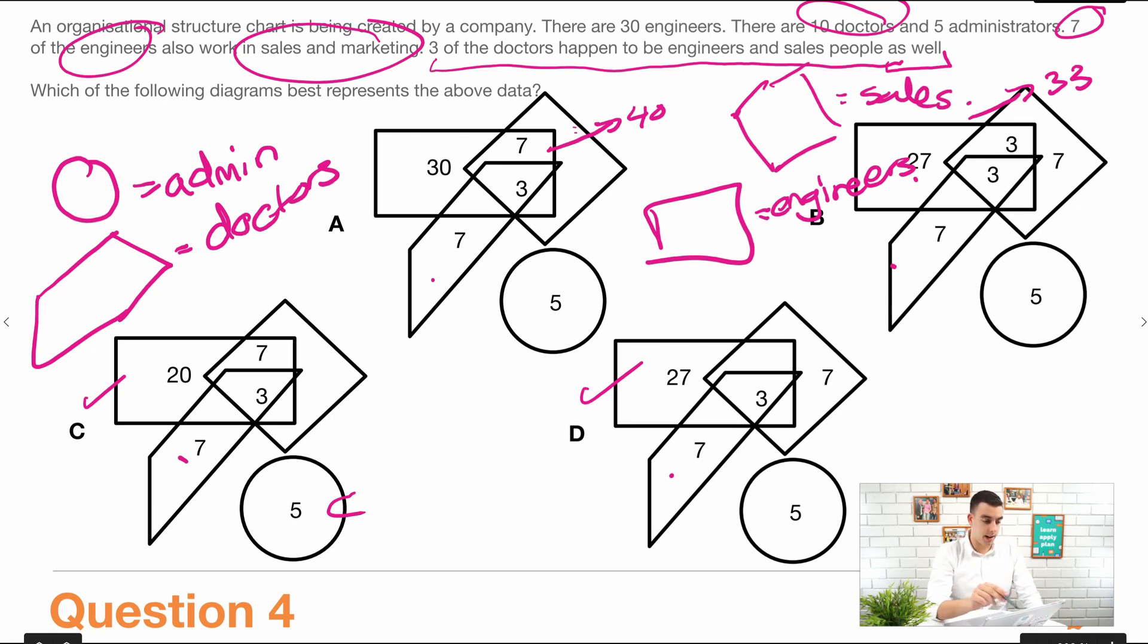And now we just have to pick which one makes sense. So we know there are three sales and marketing people and seven sales and marketing people here. So overall, the sales and marketing has to add up to 10. So it adds up to 10 in here and here, which is correct. But the only difference between C and D is where the seven is. So if we go back, seven engineers also work in sales and marketing. So in this case, in D, the seven sales and marketing people aren't in the engineering box. So we know that C is the correct answer because it has the right number overall in each of the shapes that fits with the explanation. It also has the numbers in the correct overlapping boxes and it fits with our interpretation of the question.